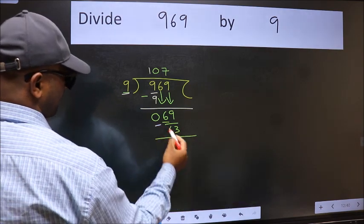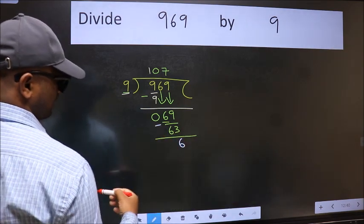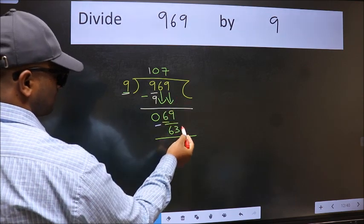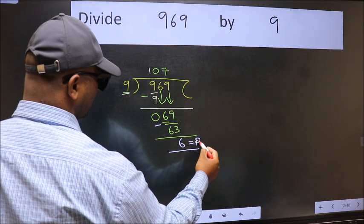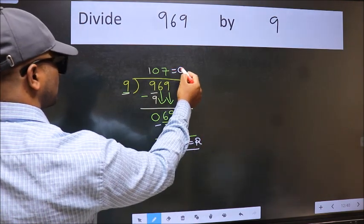Now we should subtract. We get 6. No more numbers to bring it down. So we stop here. This is our remainder and this is our quotient.